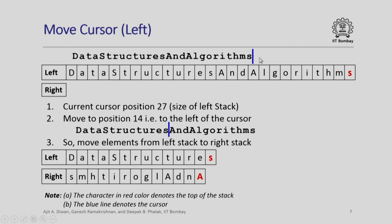Suppose I want to move the cursor to the left — imagine the cursor is at the end after the last operation, and I want to move it to the left. Currently the right stack has nothing. The current cursor position is 27, which is the size of the left stack. Suppose I want to move it to position 14, i.e., just after 'data structure'. I move elements from the left stack to the right stack. The left stack retains 'data structures' and the algorithms portion is pushed onto the right stack in reverse order, giving me the cursor at position 14.